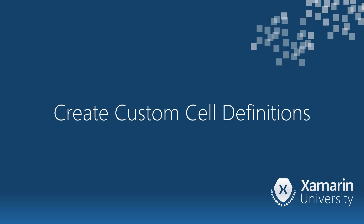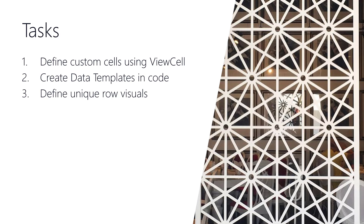In this first section, we are going to look at how to define a custom cell definition for our ListView and take complete control over how it renders each row. We have three things to talk about: one more cell style called the view cell, how to create data templates in code, and how to create unique row visualizations on a per-row basis.